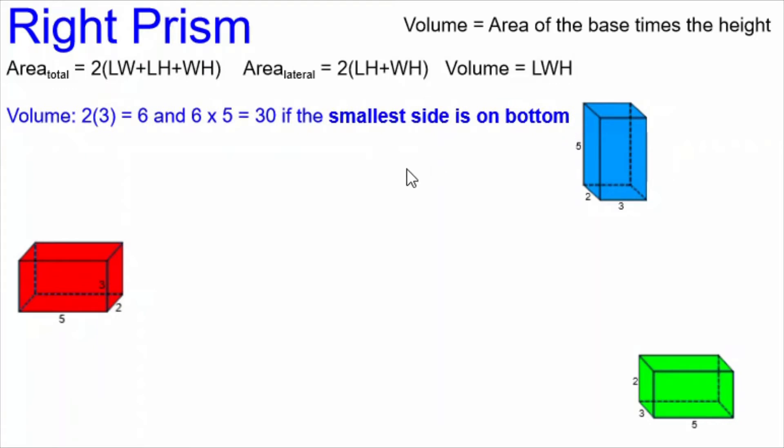If we do the volume formula with the smallest side on the bottom, first we are multiplying 2 times 3, which is the area of the base, and we get 6. Then we multiply that 6 by 5, which is the height. We get 30 units cubed.